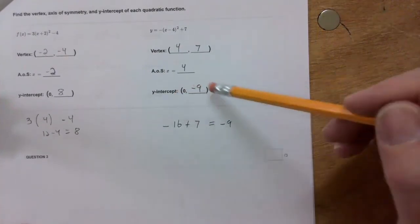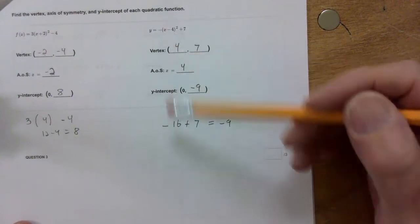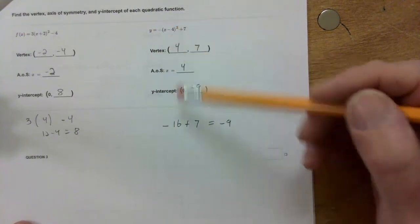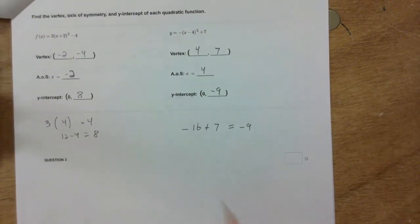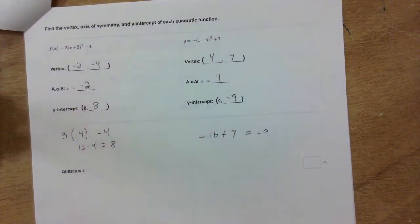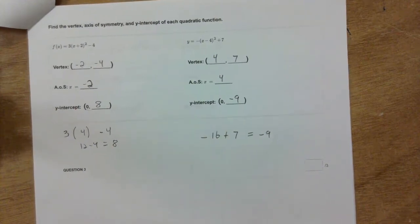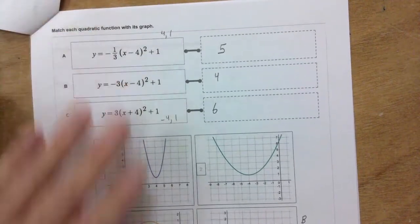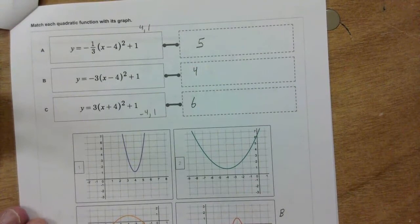For the y-intercept, I plugged in x = 0: negative 4 times negative 4 is 16, but there's a negative in front, so I put negative 16, then add 7 and I got negative 9. You can multiply that out or put this into Desmos to see where it crosses the y-axis.